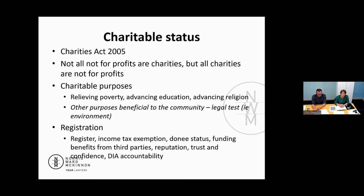The main benefit of obtaining charitable status is an exemption from income tax. Any profit earned during a financial year — ordinarily a not-for-profit would pay tax on that, though there is a $1,000 profit exemption for all not-for-profits and other exemptions like those for sports clubs. Obtaining charitable status gives you a blanket income tax exemption, which is really helpful, particularly if money or grants are deferred to following years. Tax advice is key — work with your accountant. Another key benefit is donee status, meaning anyone donating money to the charity can also obtain tax relief.